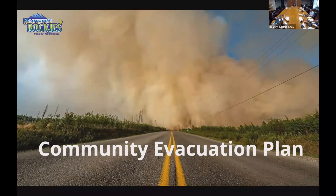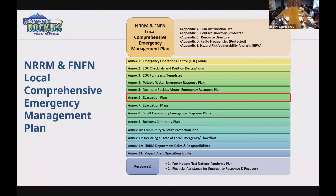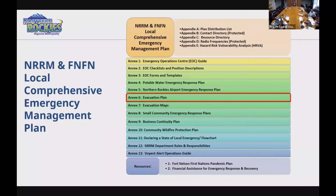Feel free to stop me at any time with questions. I'll start with a quick overview. The Northern Rockies has what we call the Local Comprehensive Emergency Management Plan — a very fulsome document containing a number of components including the emergency management plan, several appendices, and what we call annexes. The annexes are standalone plans serving different business units. Inside an annex you have our potable water emergency response plan, airport response plan, business continuity plans, community wildfire protection plans, and Annex Number Six is our evacuation plan — the document I handed out.